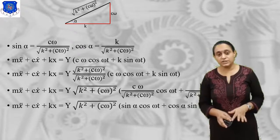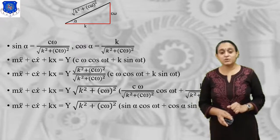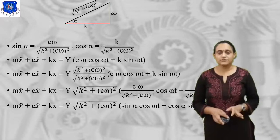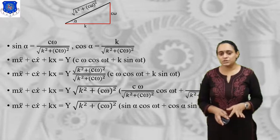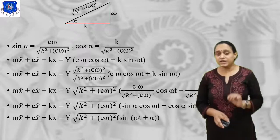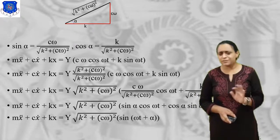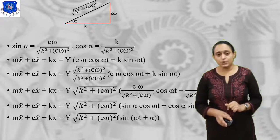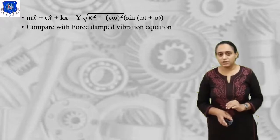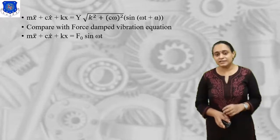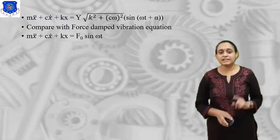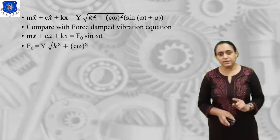By putting in both those values, we get the equation: Y√(k² + c²ω²) · sin(ωt + α). This matches our standard force equation. Comparing with the standard forced vibration equation, instead of F₀ we get Y√(k² + c²ω²), and instead of sin(ωt) we get sin(ωt + α).